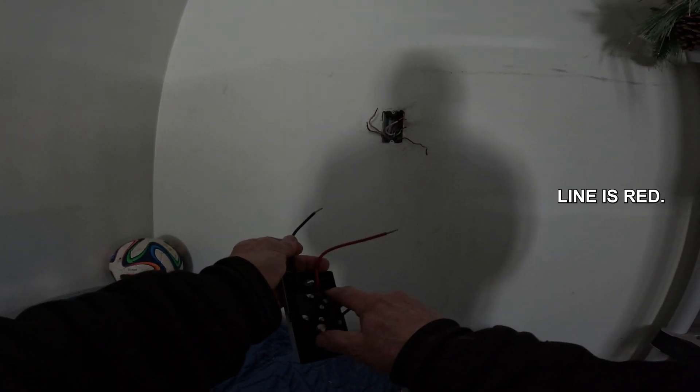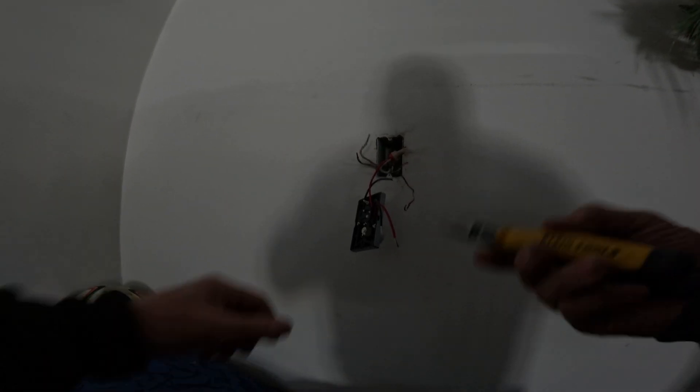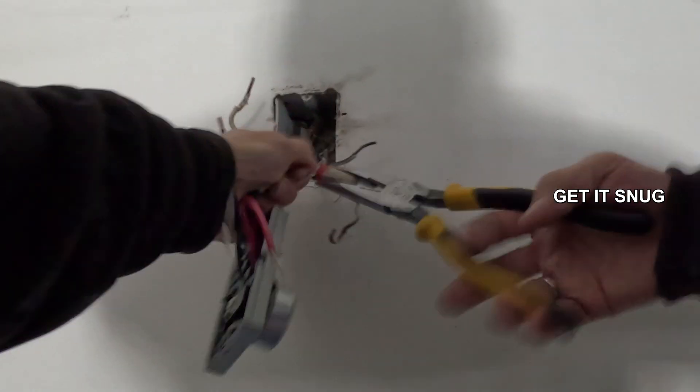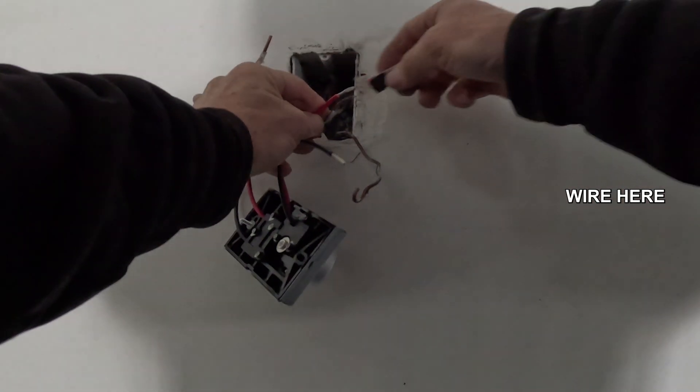So we'll take line which we know is on the left and get it snug on your wire nut. And then you're going to take the other line to your other wire here.